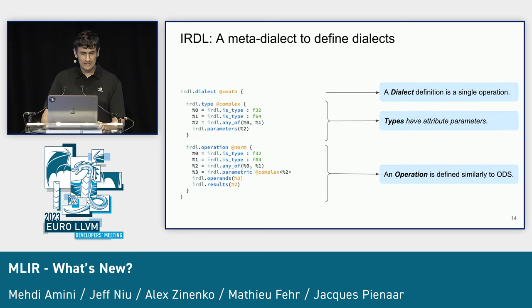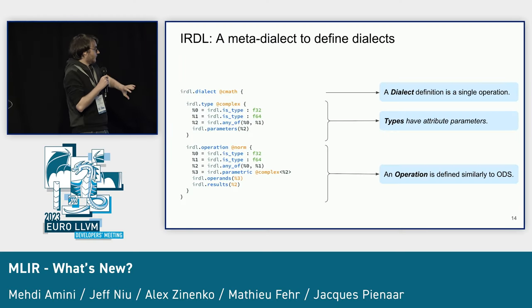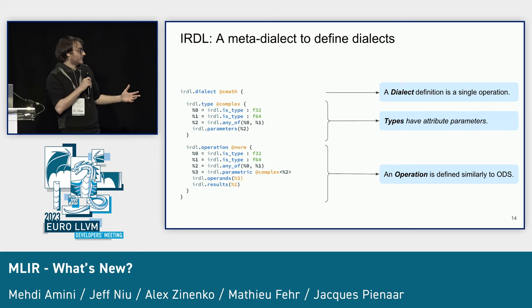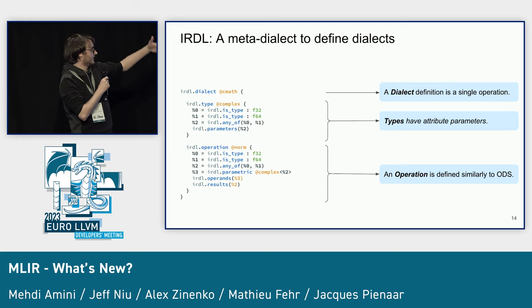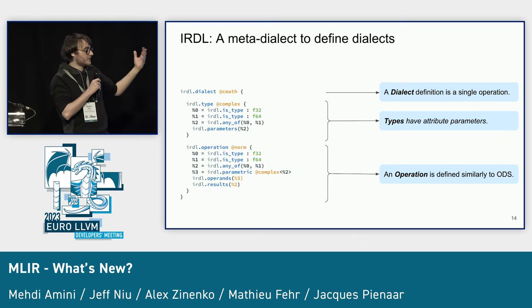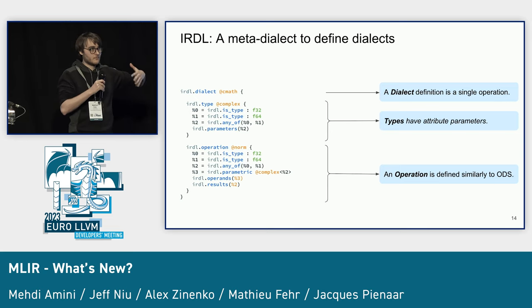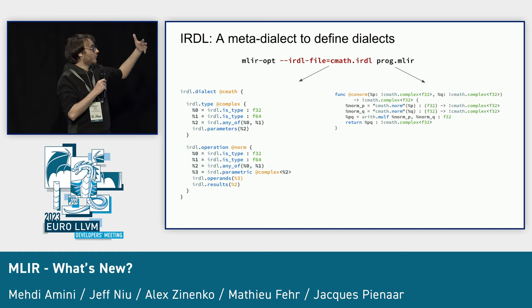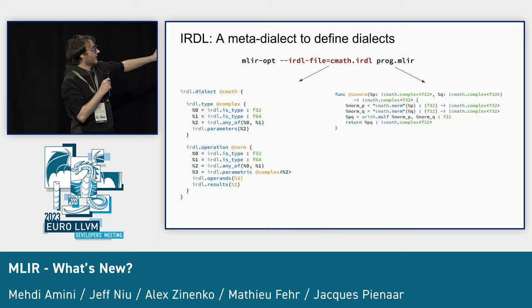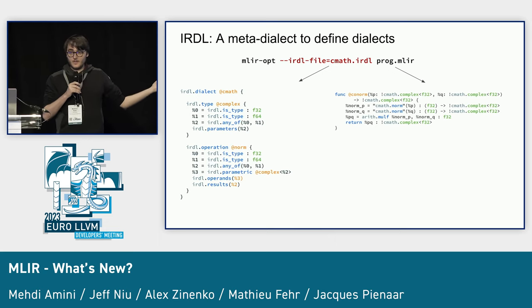Now let's talk about IRDL. In MLIR everything is a dialect, so why not have dialect definitions themselves be a dialect? That's the goal of IRDL — to take ODS and transform it into a program or dialect. You can define a dialect declaratively, adding types, attributes, and operations. What was recently added is the ability to load new dialects at runtime in mlir-opt, meaning you can add an IRDL program and then add another program using that dialect — dynamic dialects, using MLIR to define MLIR dialects.